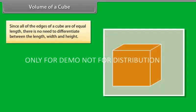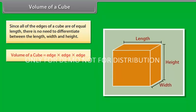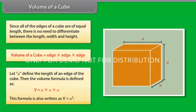Since all of the edges of a cube are of equal length, there is no need to differentiate between the length, width, and height. The volume of a cube is determined by multiplying the length of three edges. Let A define the length of an edge; then the volume formula is V = A × A × A, also written as V = A³.